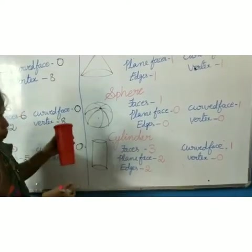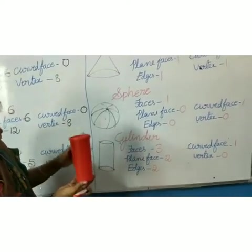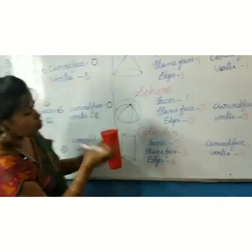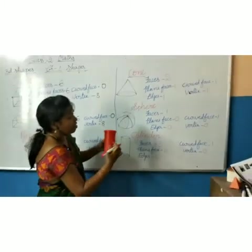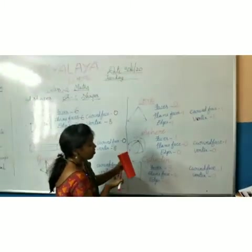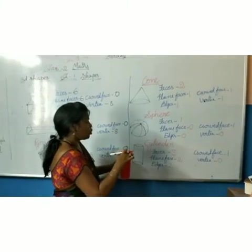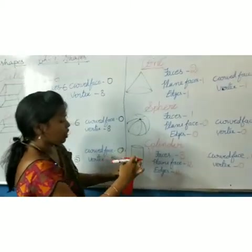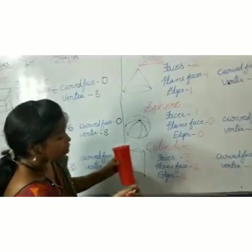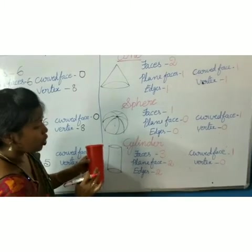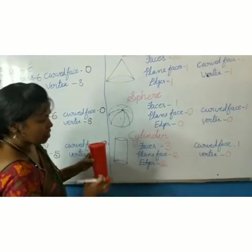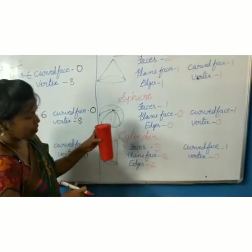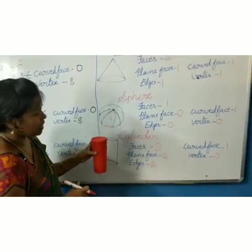Again I explain cylinder. Example for cylinder — tumbler. Tumbler has two plain faces and one curved face, and two edges. These are the edges. See children, these are the two edges. No vertex, no corner. Did you understand children?